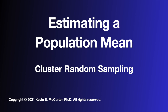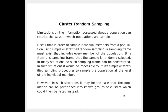In this module, we look at cluster random sampling. Limitations on the information possessed about a population can restrict the ways in which populations are sampled. Recall that in order to sample individual members from a population using simple or stratified random sampling, a sampling frame must exist that includes every member of the population.